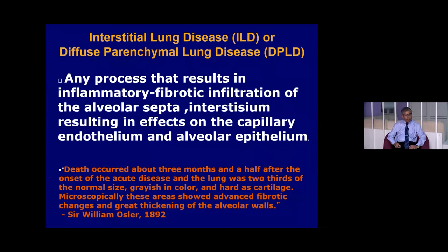William Osler in 1892 described a postmortem specimen of lung, noting that death occurred about three and a half months after onset of acute disease. The lung was two-thirds of normal size, grayish color, and hard as cartilage. Microscopically, the area showed advanced fibrotic changes and great thickening of the alveolar wall — indirectly illustrating the end-stage effects of interstitial lung disease.